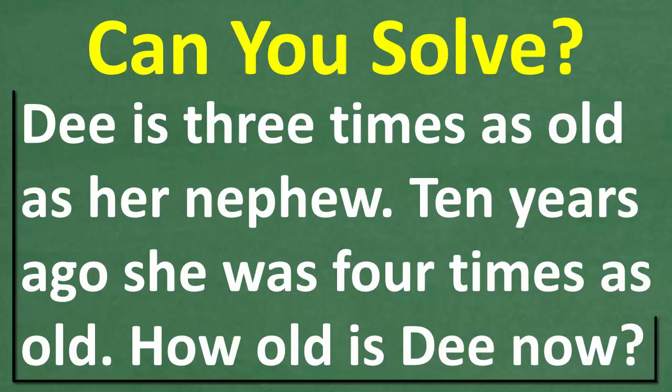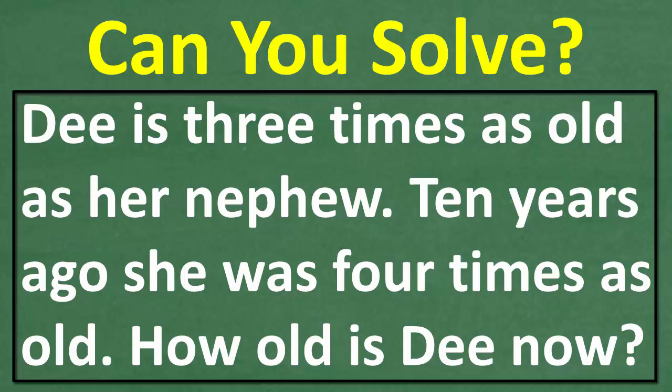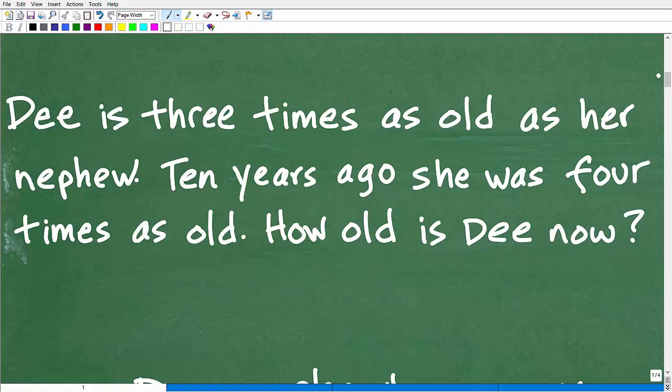So one more time. D is three times as old as her nephew. Ten years ago, she was four times as old. How old is D now? We're reading the problem again. And if you notice, I've read the problem at least three times. This is a rule that you should follow. When you're dealing with any math word problem, read a problem at least three times. Make sure your brain has soaked in all the information and you truly understand the question.